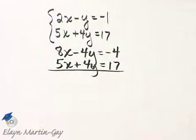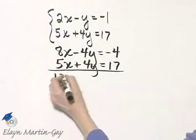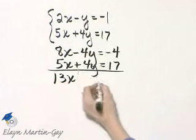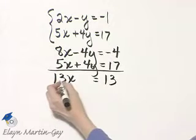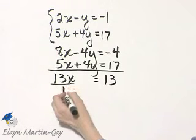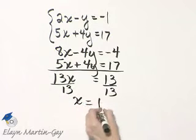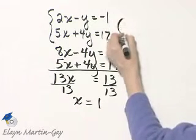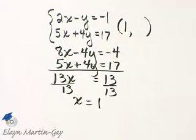And now look what happens. I can add the two equations, 8x and 5x, that's 13x. The y's subtract out, and I have 17 minus 4, 13. I can now solve for x. I'll divide both sides by the coefficient of x, which is 13, and I have x is 1. So it looks like we have a single ordered pair solution.